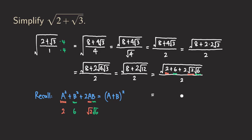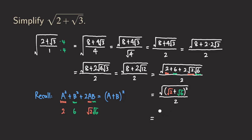So we continue writing: we have the square root of the quantity radical two plus radical six, all squared. Since this is a positive number, the square root and the square cancel each other out. And so our final answer is simply radical two plus radical six, all divided by two. And we are finished.